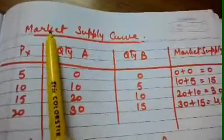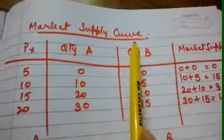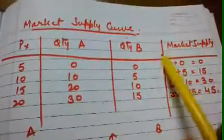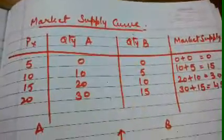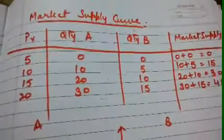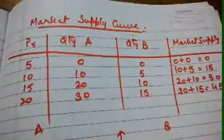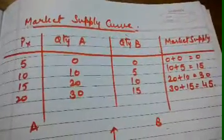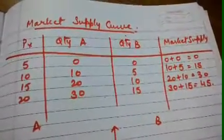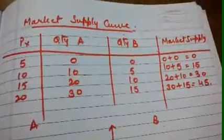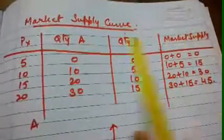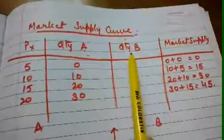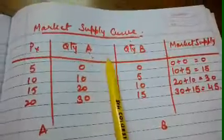The next is the market supply curve. When we represent the market supply schedule on a graph, it is called the market supply curve. For market supply, we have more than one firm — it is the supply schedule of more than one firm. For example, we are taking Firm A and Firm B with similar data.